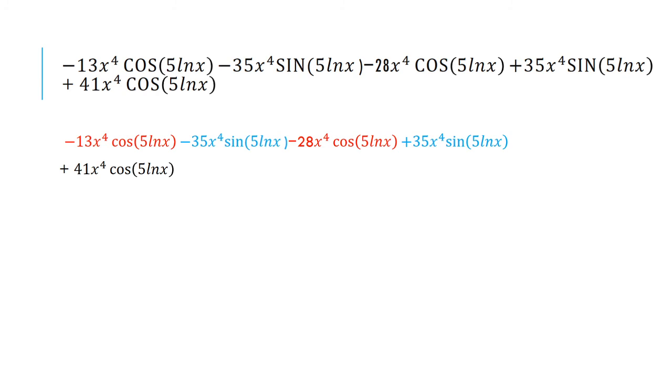So for the red, we have negative 13 and negative 28 as coefficients. Add those together, we get negative 41x to the fourth cosine 5 ln of x. And then the blue, notice they're the exact opposite. So if I add those together, I get zero. And then I'm left with 41x to the fourth cosine 5 ln of x in black. And clearly, the red and the black are going to cancel. So we end up getting zero.